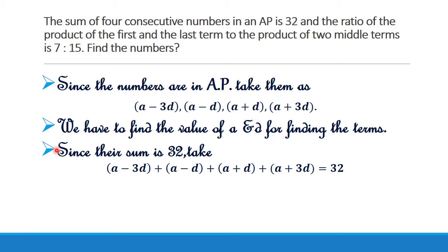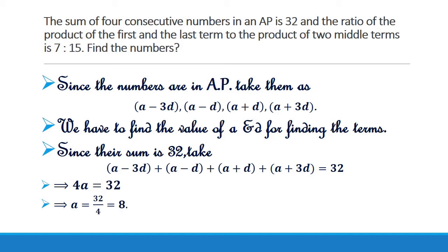Now minus 3D and plus 3D cancel each other, minus D and plus D cancel each other, and we get 4A equal to 32, which implies A equal to 32 by 4, which is equal to 8.